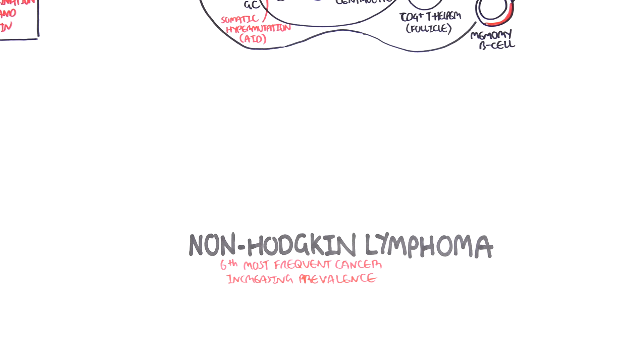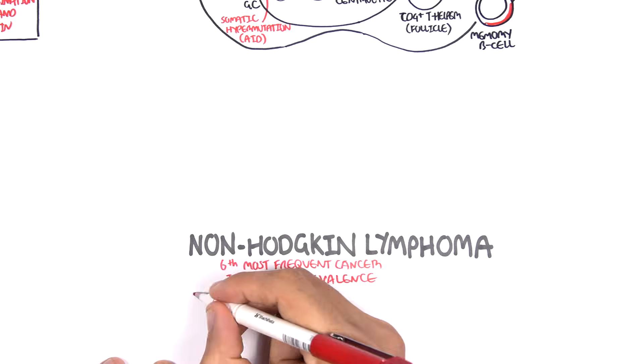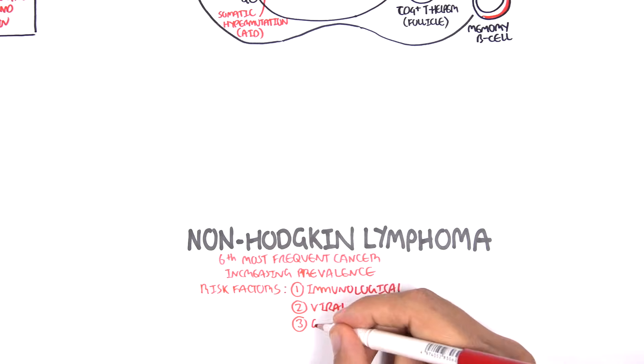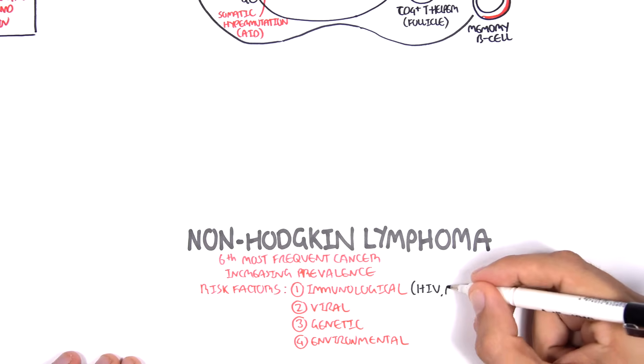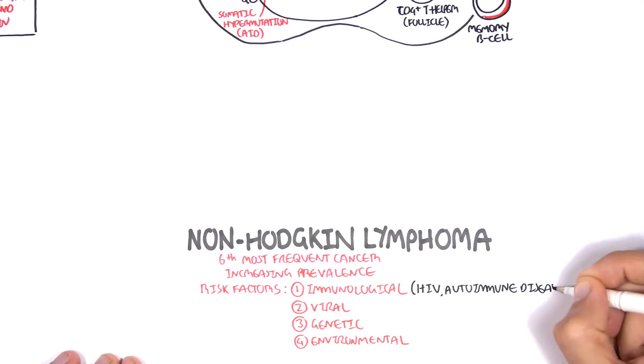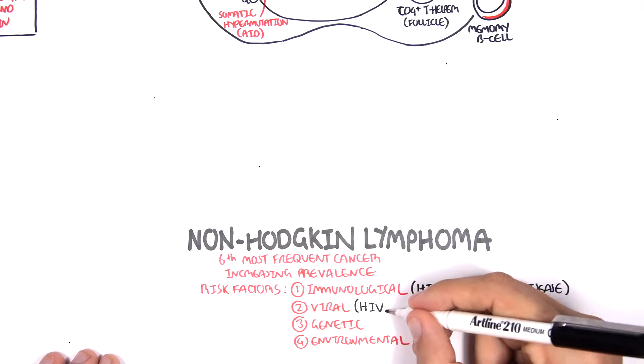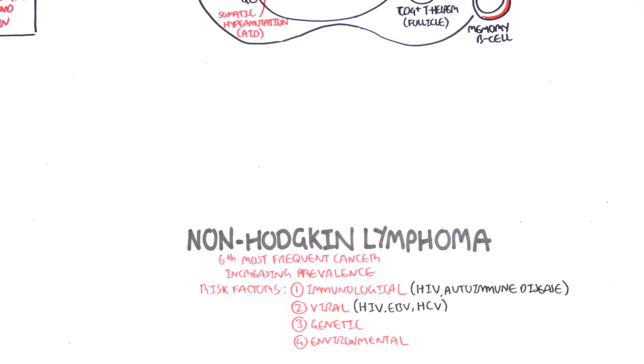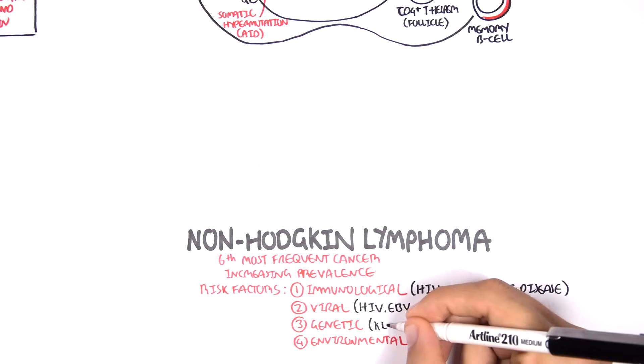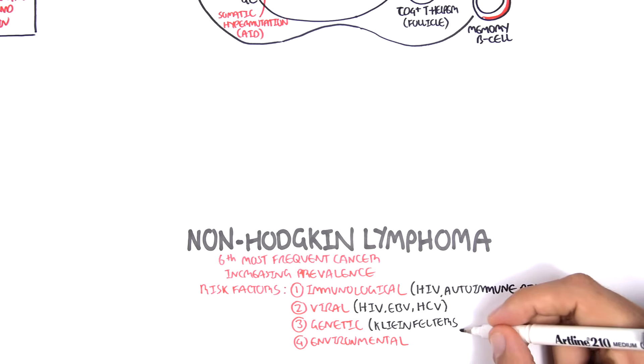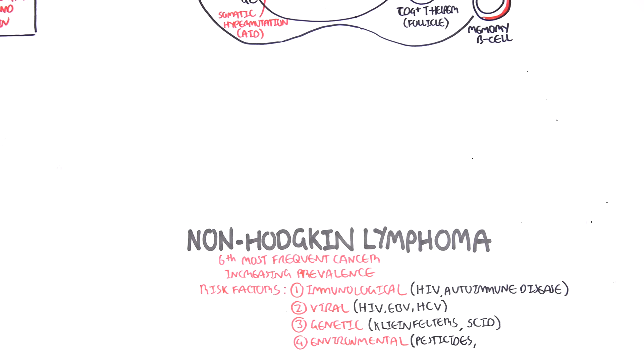Risk factors for non-Hodgkin's lymphoma include immunological disturbances, viral, genetic, and environmental factors. Immunological can be HIV or autoimmune diseases which predispose one to lymphoma. Viruses such as HIV, Epstein-Barr virus, and HCV are risk factors for lymphoma. Genetics, as in Klinefelter's and SCID, increase the risk of non-Hodgkin's lymphoma. Environmental risk factors include pesticides, herbicides, and smoking.